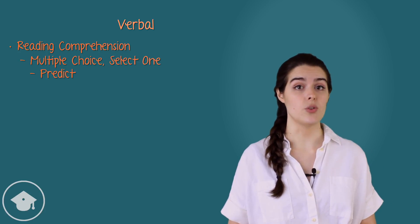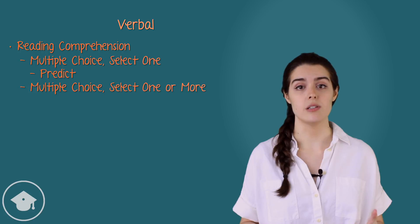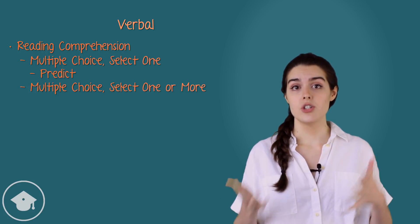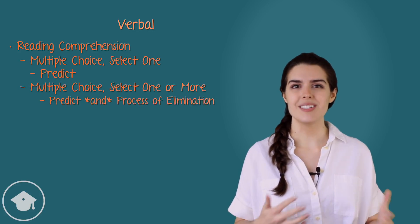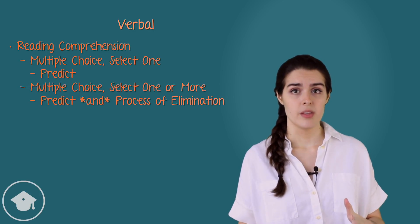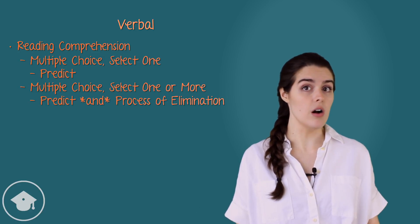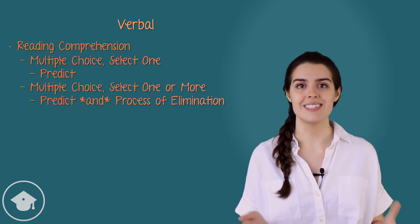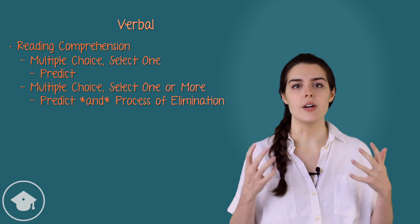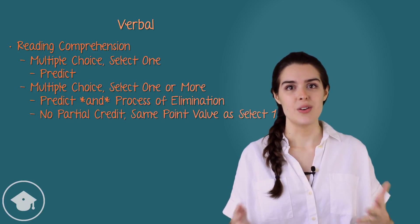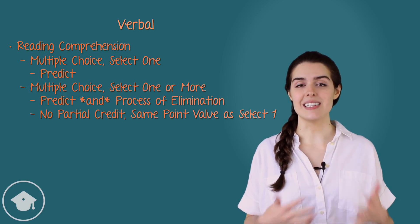The second type of reading comprehension question is multiple choice, select one or more. The test taker is given only three answer choices, but one, two, or all three may be correct. Some level of predicting is a good idea, but process of elimination becomes much more important. On select-one questions, once we have a correct answer, we don't need to closely examine the others. For select-one-or-more questions, since each answer choice may independently be true, we need to consider each one individually. These questions do not have partial credit, nor are they worth additional points for the extra effort.